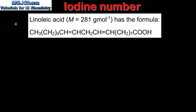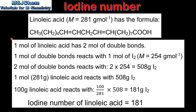Next we look at an example. Linoleic acid, which has a molar mass of 281 grams per mole, has this formula. So let's calculate the iodine number of linoleic acid.